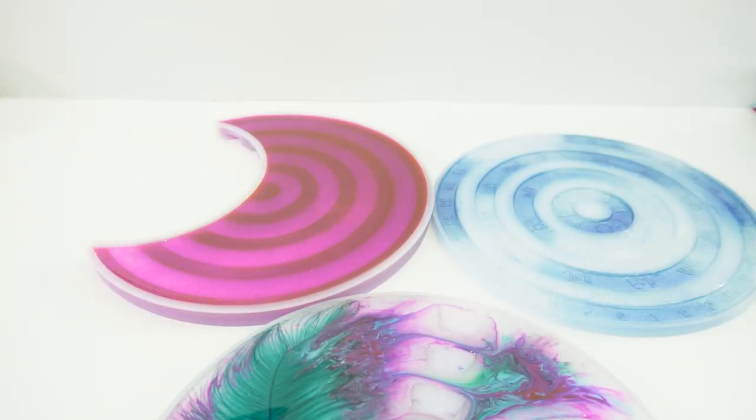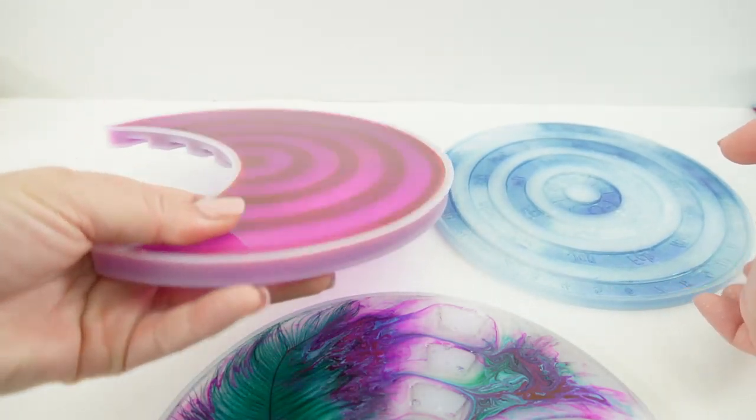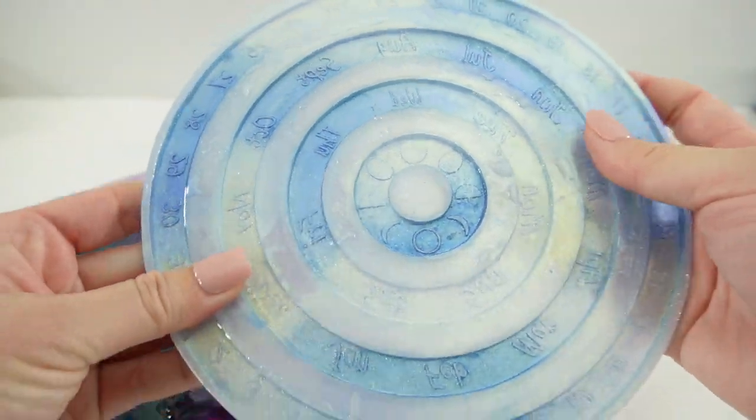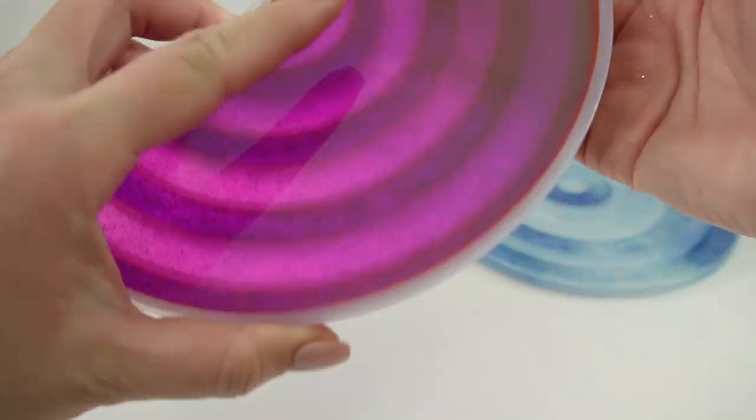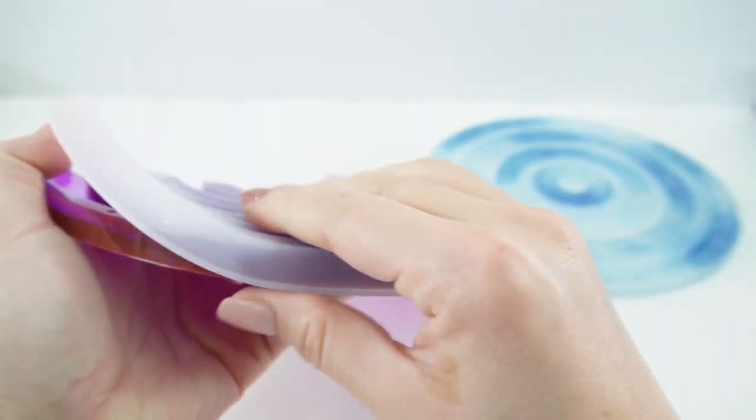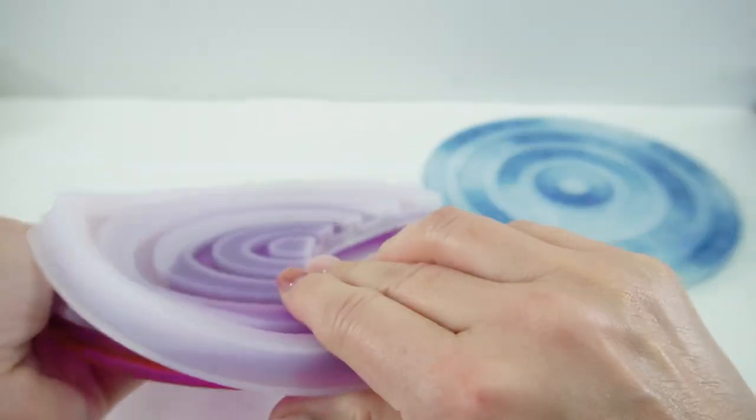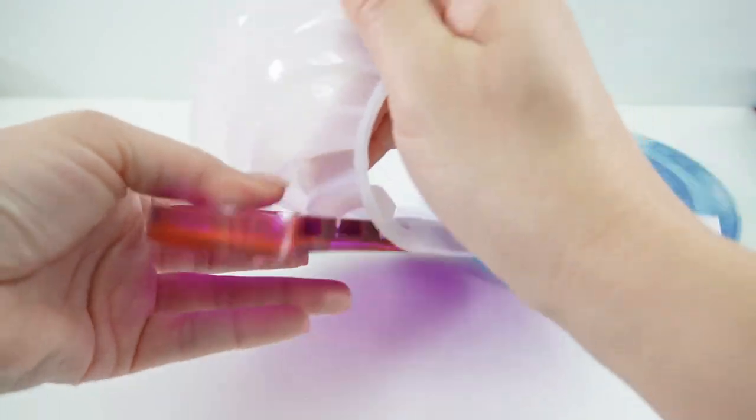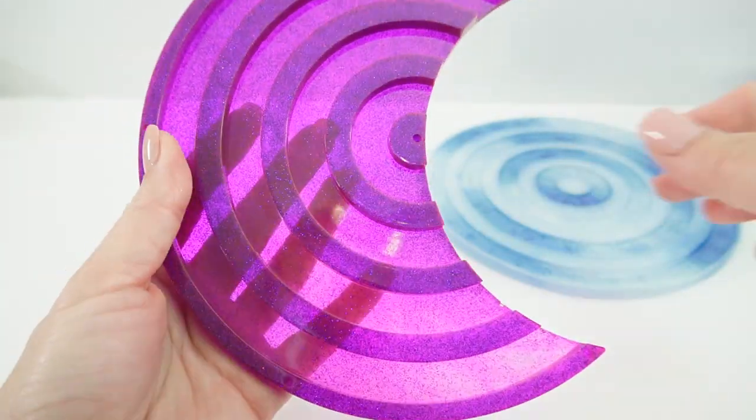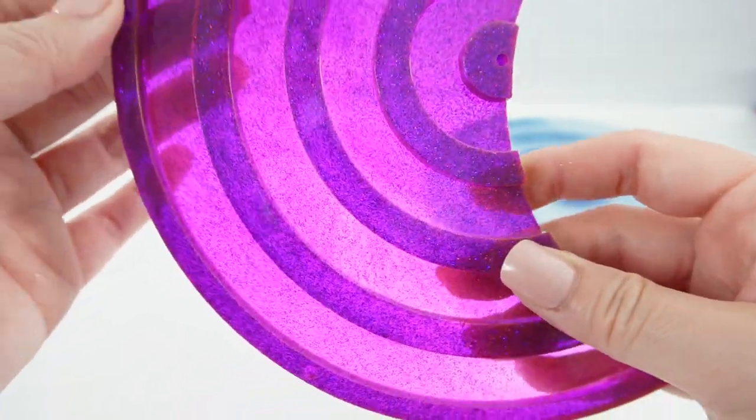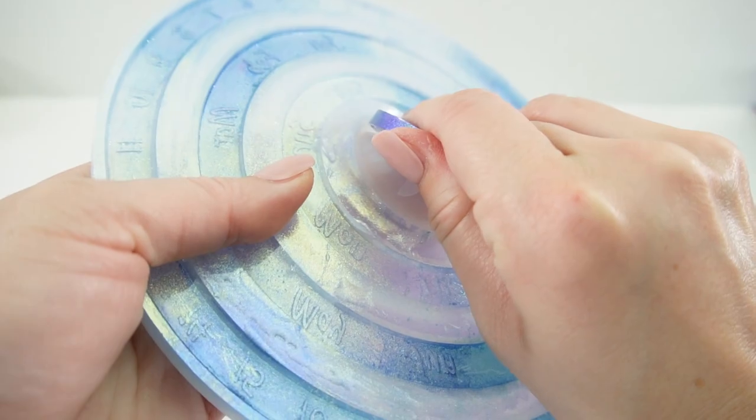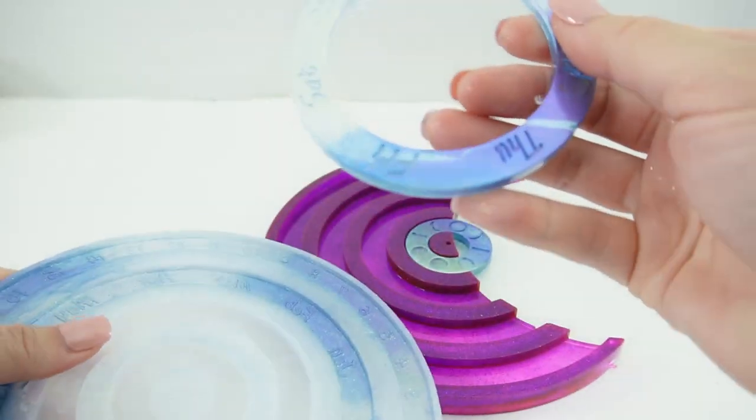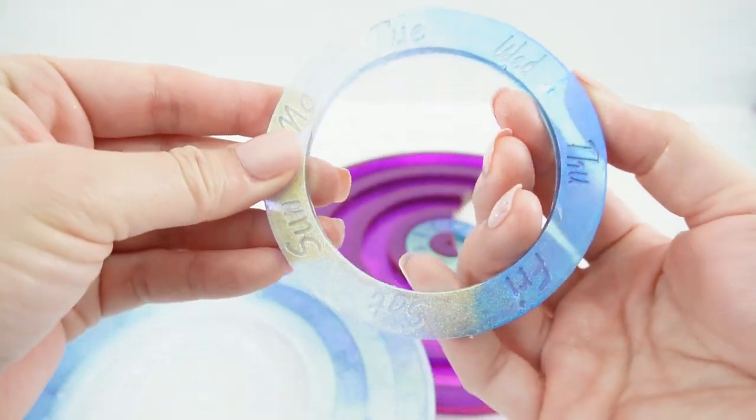All right everyone, it's been a few hours and we're ready to demold. So here are the three pieces. Here's the bottom, here's the top piece, and here are the rings for the middle. So let's go ahead and start with this bottom piece. Oh my goodness this is so pretty, look how glittery it is. Here are the inner rings. Here are the moon phases, here are the days of the week.